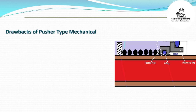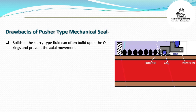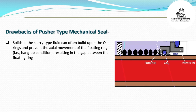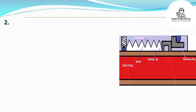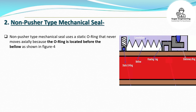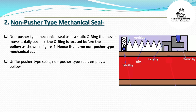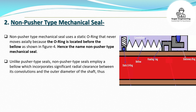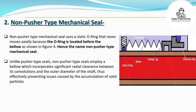Drawbacks of pusher type mechanical seal: Solids in the slurry type fluid can often build up on the O-rings and prevent the axial movement of the floating ring — i.e., a hang-up condition — resulting in a gap between the floating ring and the stationary ring. Non-pusher type mechanical seal: A non-pusher type mechanical seal uses a static O-ring that never moves axially, because the O-ring is located before the bellows, as shown in Figure 4. Unlike pusher type seals, non-pusher type seals employ a bellows which incorporates significant radial clearance between its convolutions and the outer diameter of the shaft, thus effectively preventing issues caused by the accumulation of solid particles, commonly known as the hang-up problem.